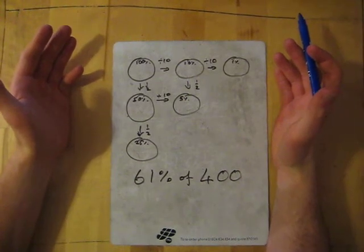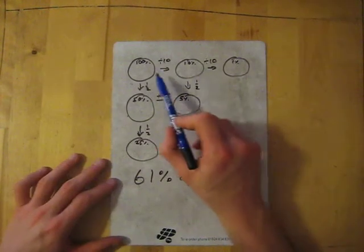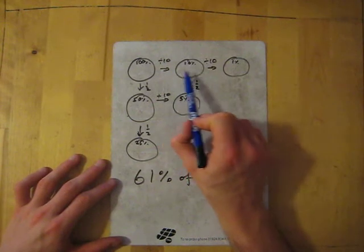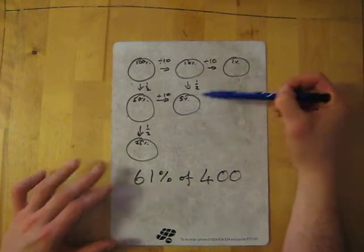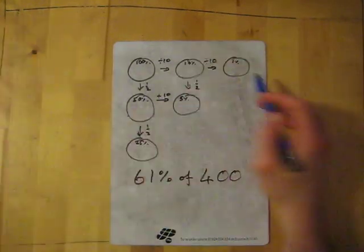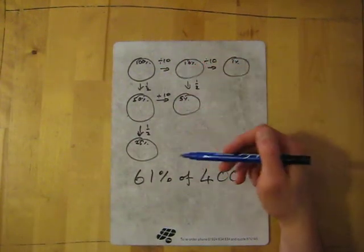If we work out all of these we can get to any percentage pretty much that we need. As you go across you divide by 10, and as you go down you half. So across divide by 10, down half.